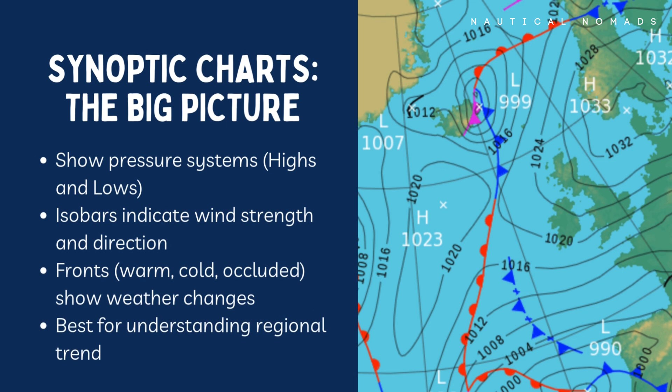Synoptic charts, also called surface pressure charts, give you the big picture. They show you where the weather is coming from and where it's going. You'll see high and low pressure systems, frontal boundaries, and isobars — those curved lines that show areas of equal pressure. These charts are excellent for seeing the overall setup. Is a low pressure system approaching? Are the isobars tightening? Is a front moving over your sailing area? These are questions that help you anticipate the weather, not just react to it.